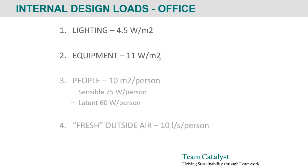The second internal load is equipment — any activity inside the building like computers, fax machines, scanners, printers, or coffee machines, all of which release heat. You provide an equipment power density and a schedule showing how it varies across the day and week. Currently in the National Construction Code for office buildings, the equipment power density allowed for design purposes is 11 watts per meter squared.